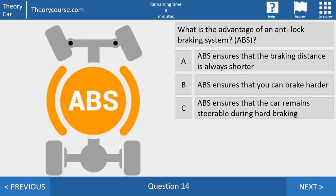Question 14. What is the advantage of an anti-lock braking system? ABS. Answer A. ABS ensures that the braking distance is always shorter. Answer B. ABS ensures that you can brake harder. Answer C. ABS ensures that the car remains steerable during hard braking.